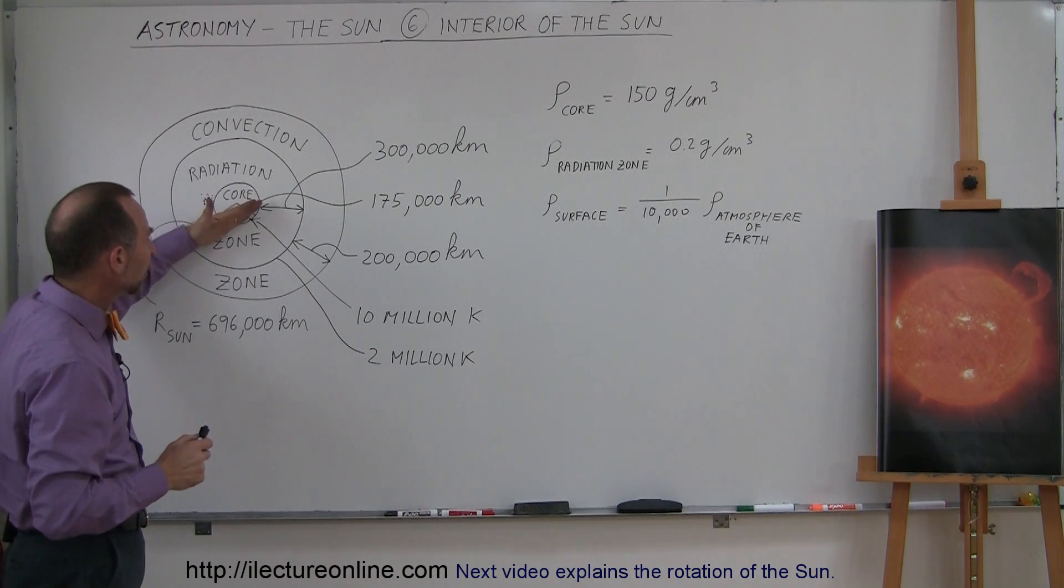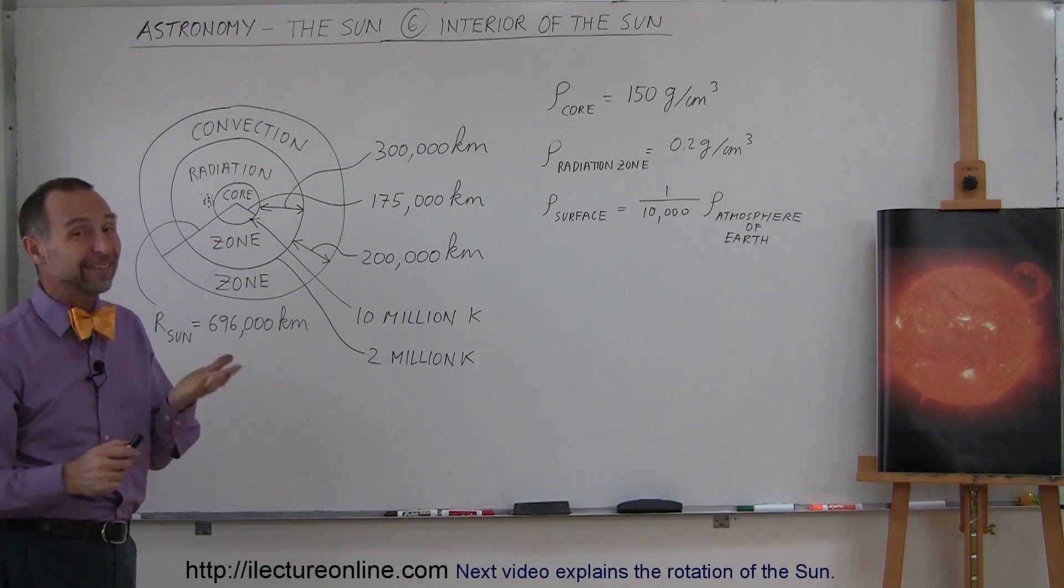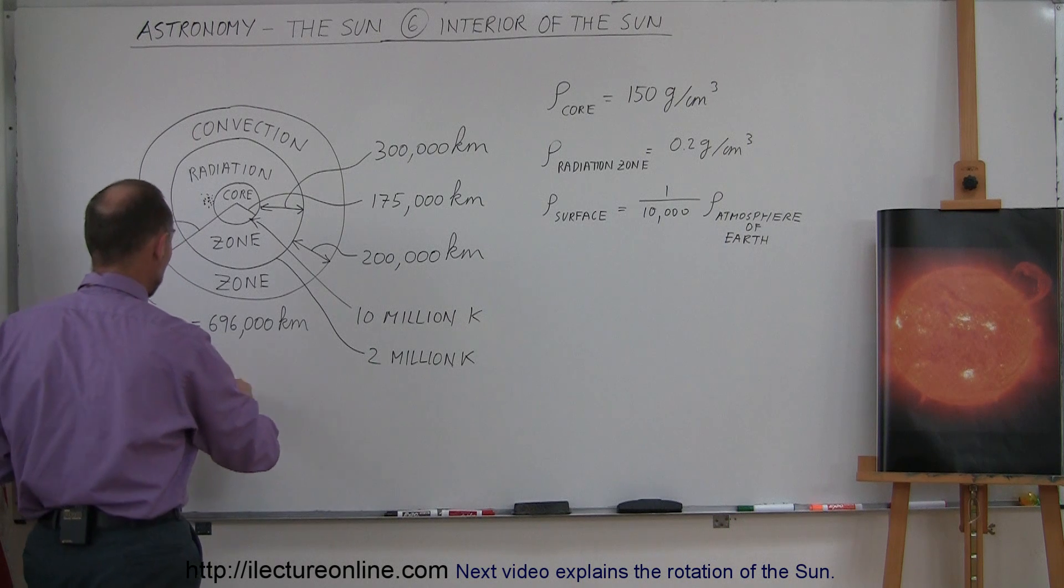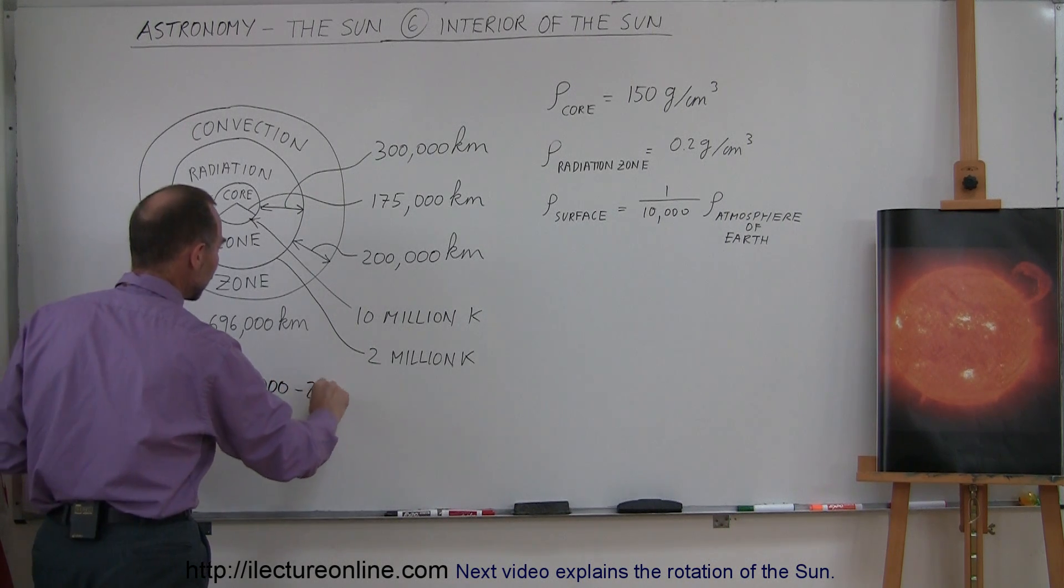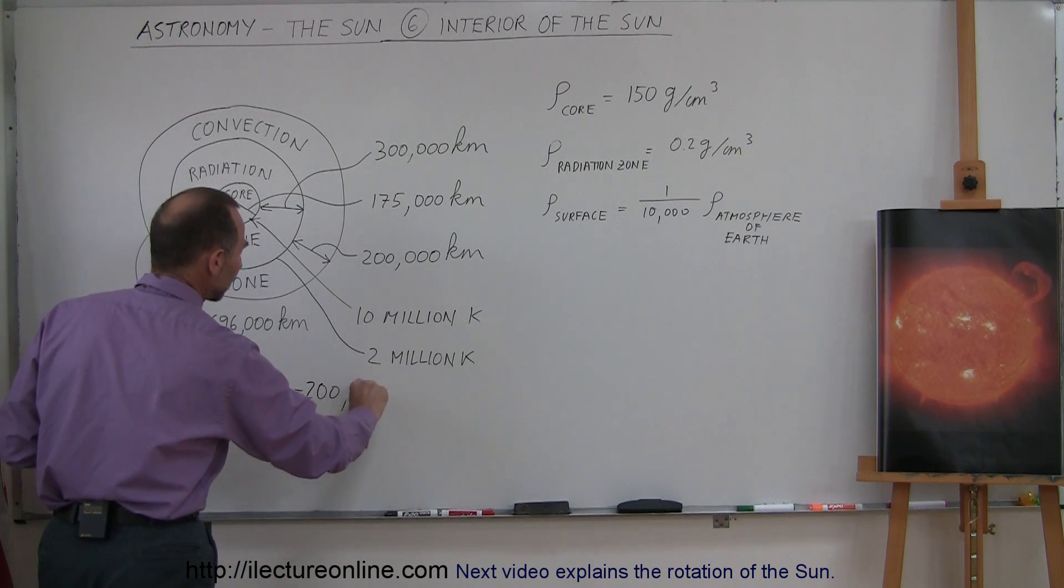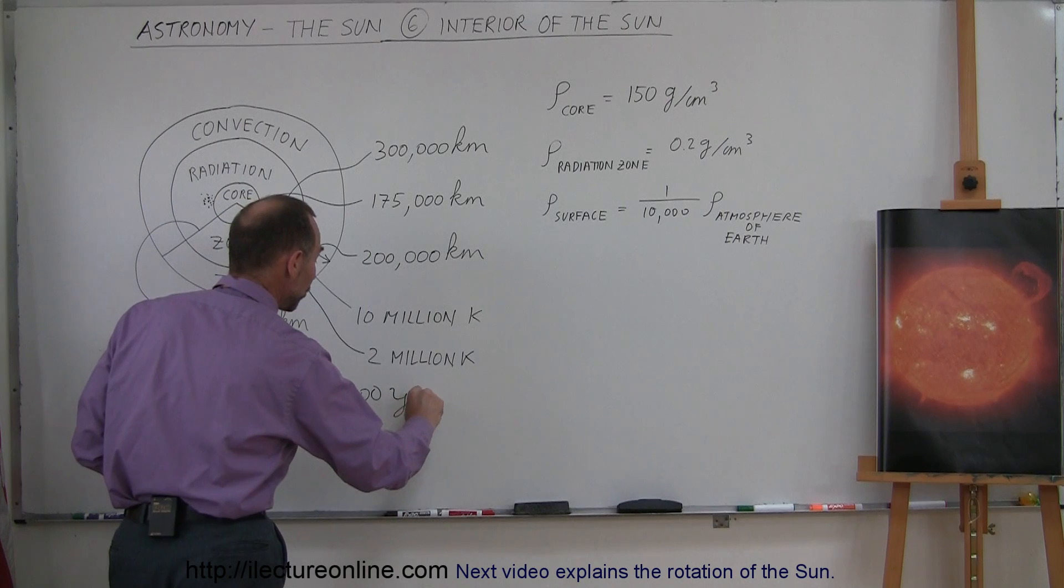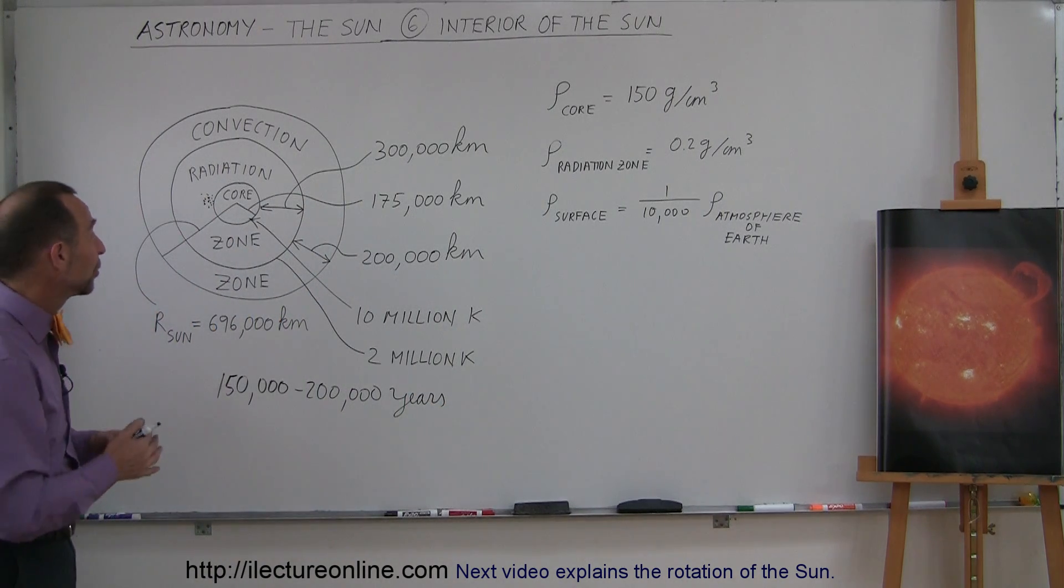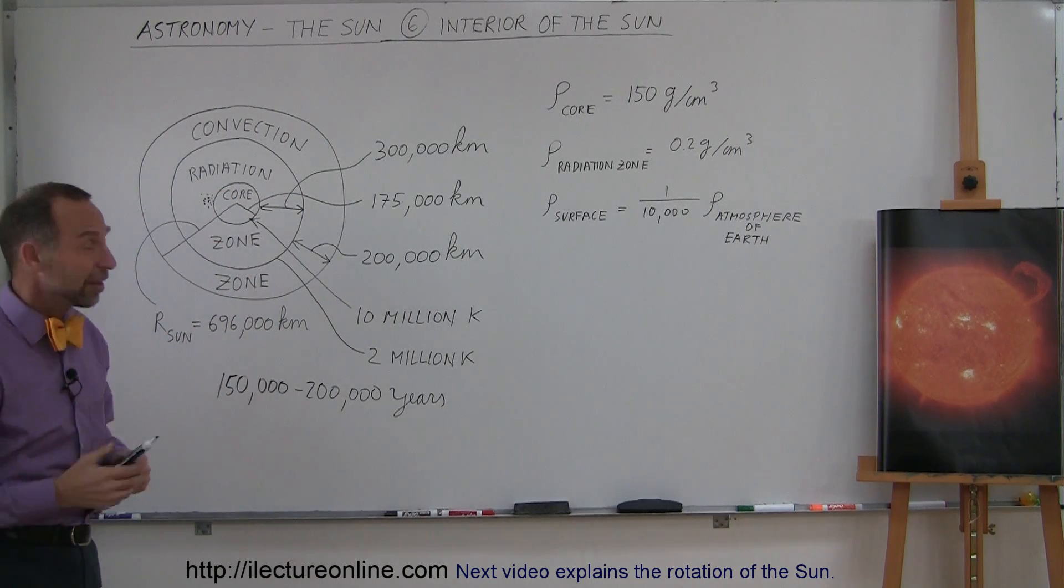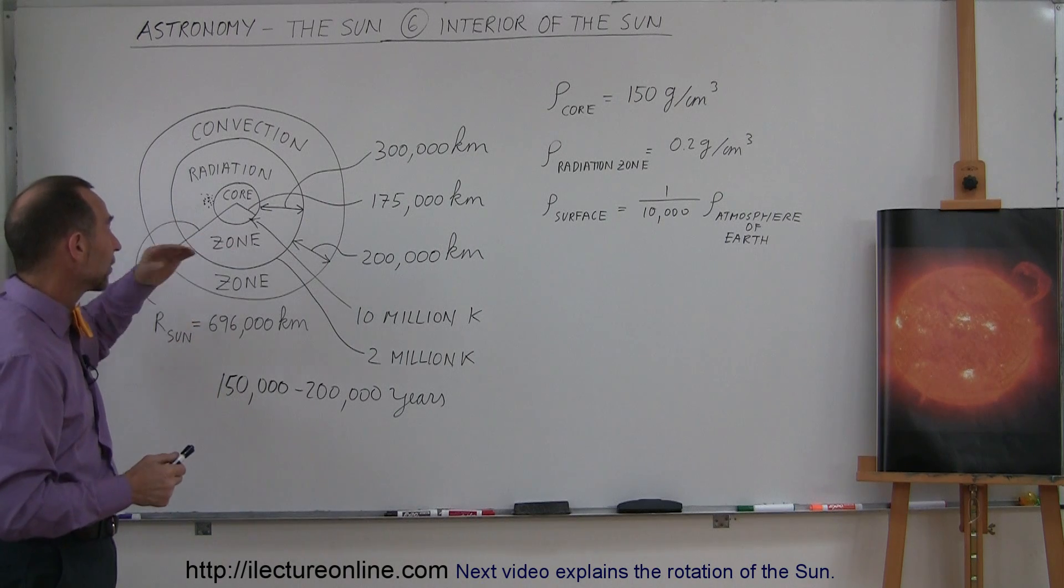So it takes an enormous amount of time for the radiation to finally make it all the way to the outside of the Sun. It's estimated that it takes anywhere from 150,000 to 200,000 years for the radiation that was produced at the core to make it all the way out. So the sunlight that we receive from the Sun today was produced at the center of the core about 200,000 years ago. It's really difficult for that energy to finally make its way out of the Sun.